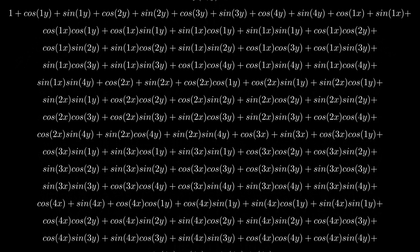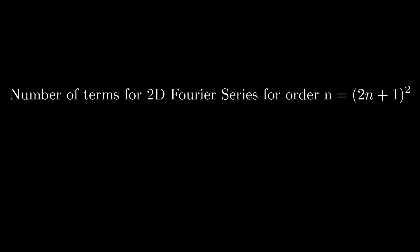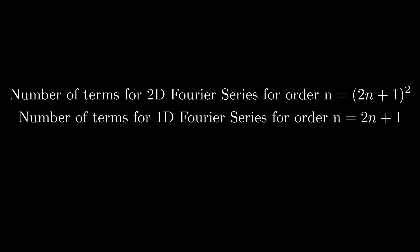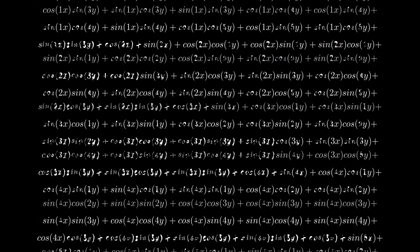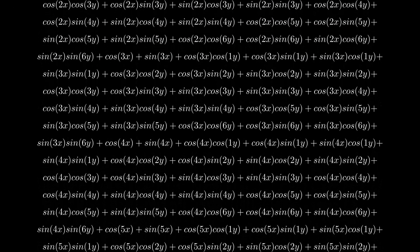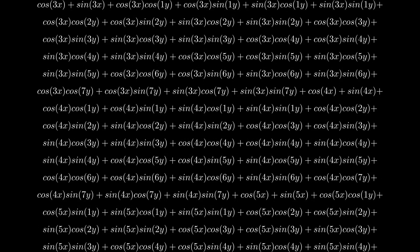That is a lot of terms. We have to calculate this many terms per order, and this number grows very quickly as we increase the order — much faster than it would for the 1D series. And this is just for a baby 2D input. For a 3D, 4D, 5D input, forget it. The number of computations needed for higher dimensional Fourier series explodes as we increase the dimensionality of our inputs. We have encountered the curse of dimensionality. Lots of methods of function approximation and machine learning break down as dimensionality grows — these methods might work well on low dimensional problems, but they become computationally impractical or impossible for higher dimensional problems.